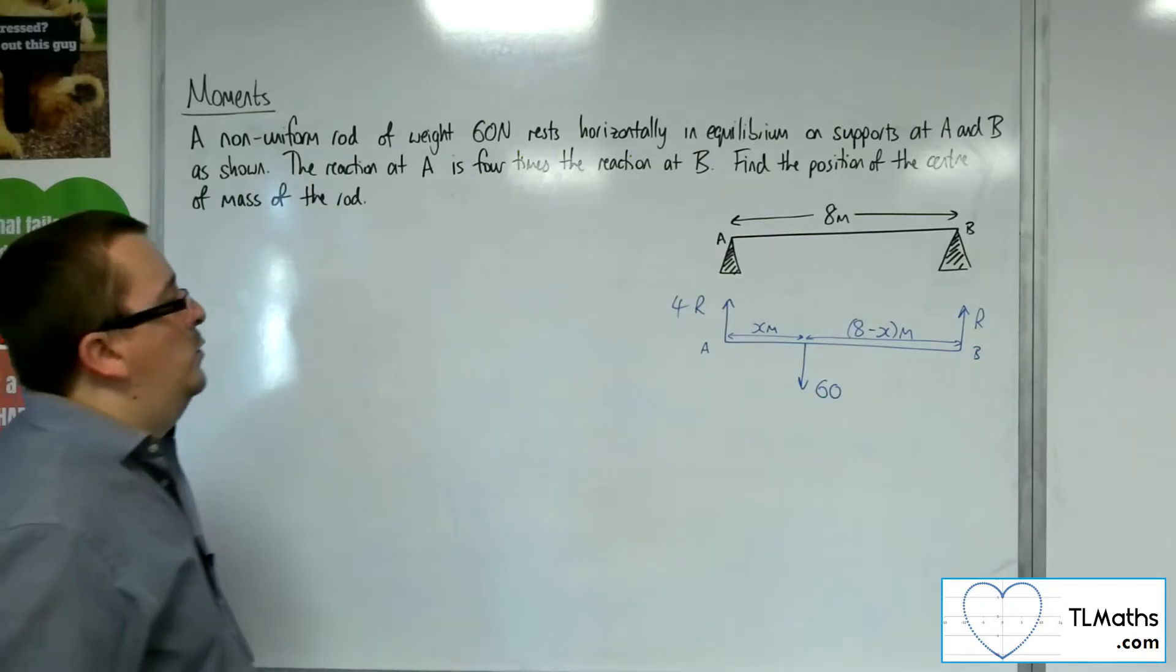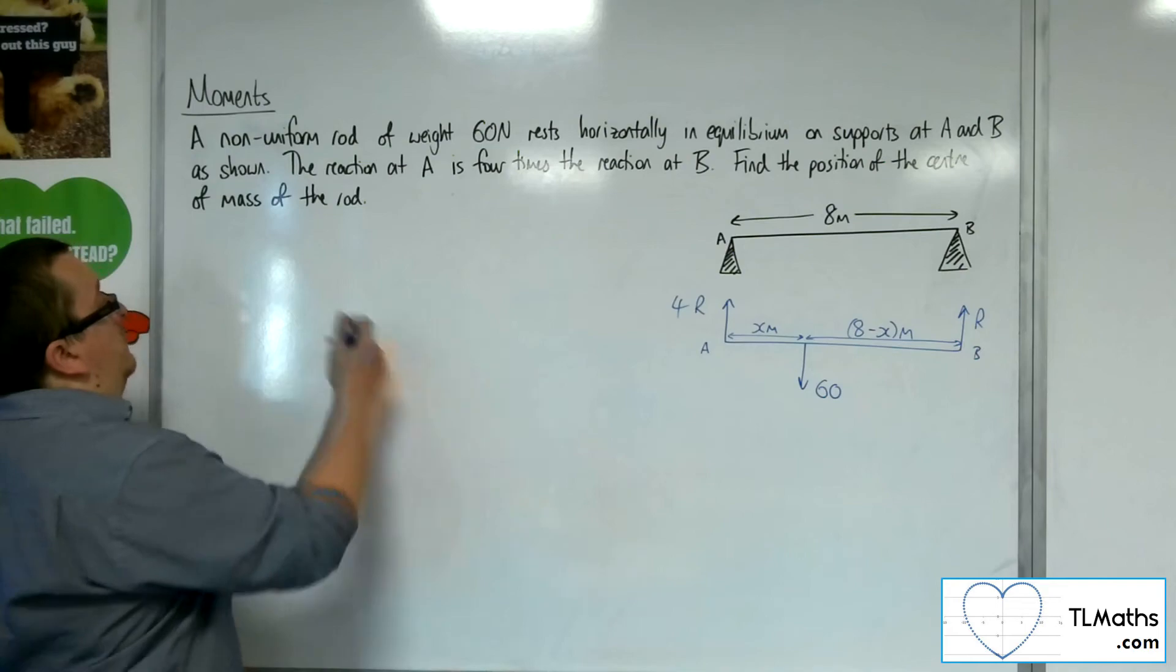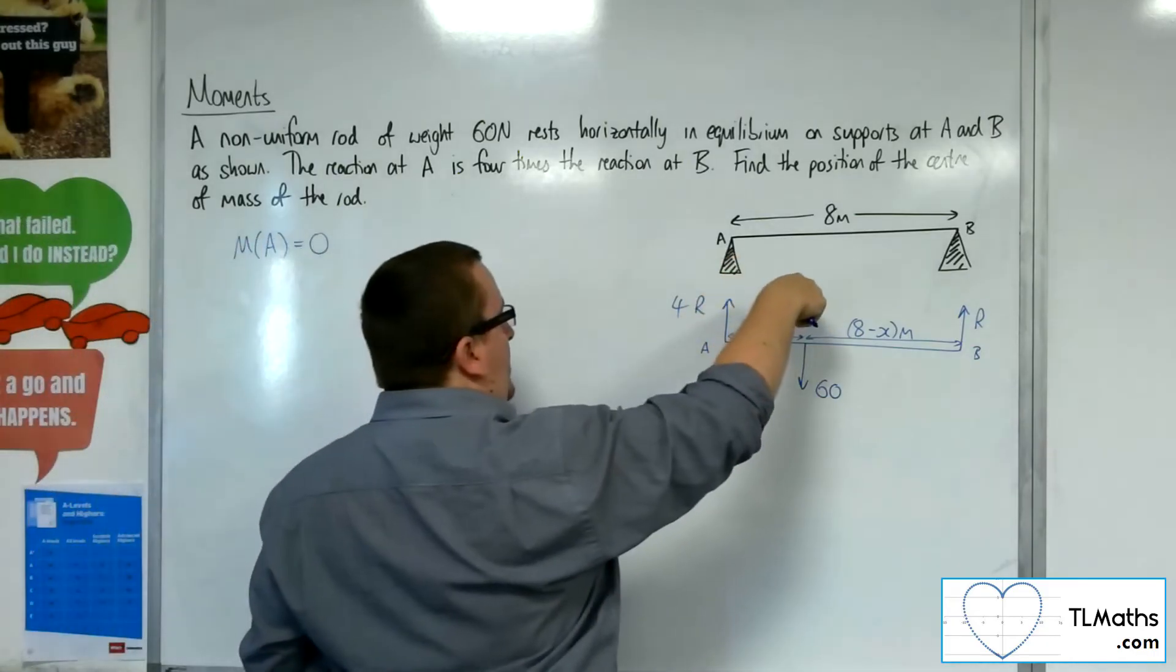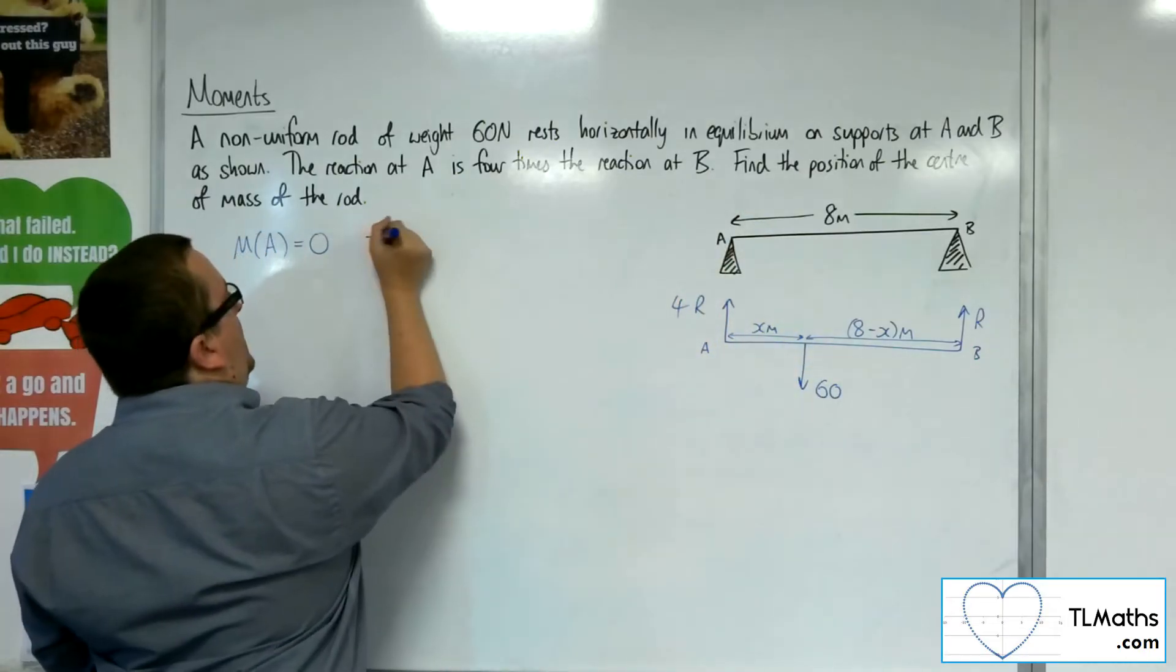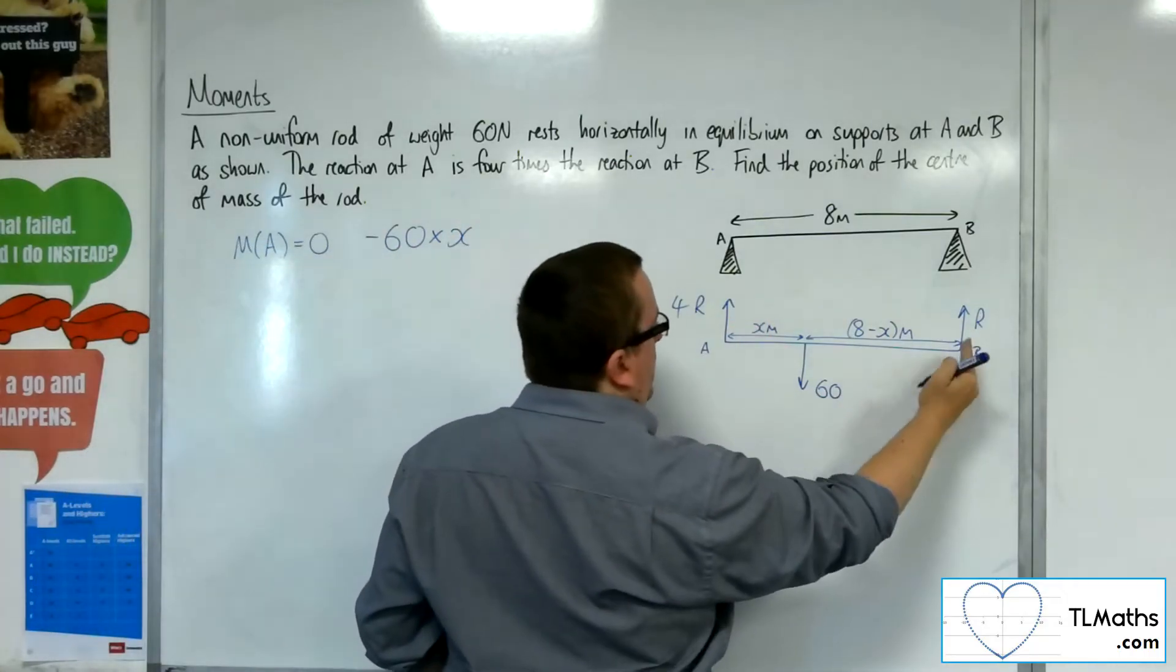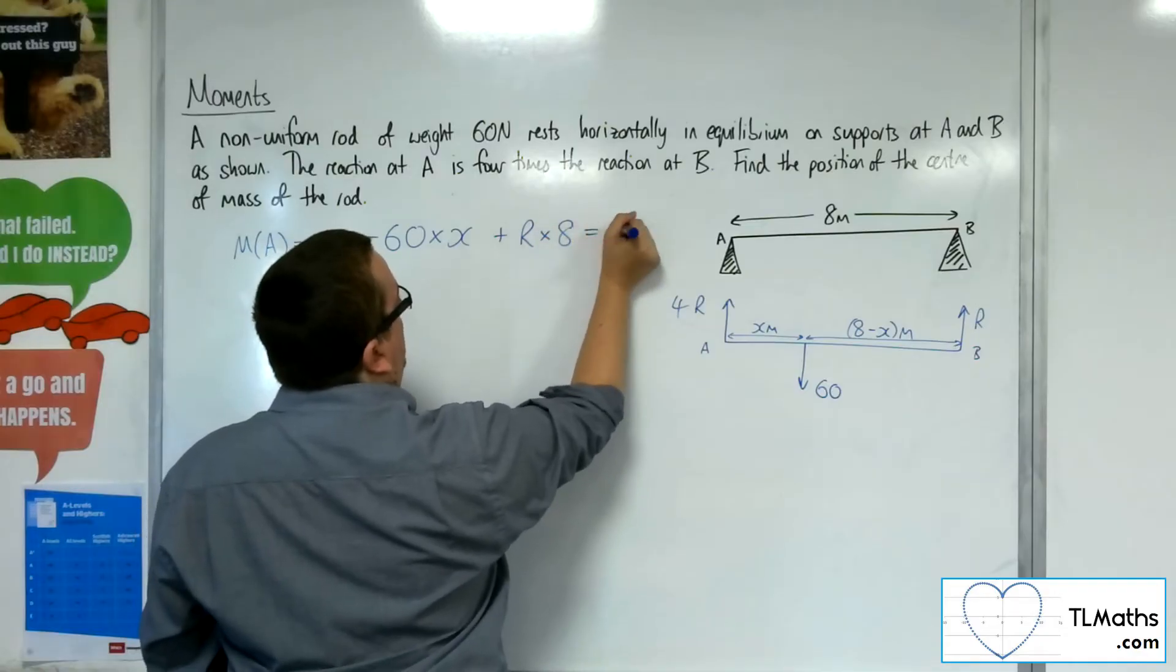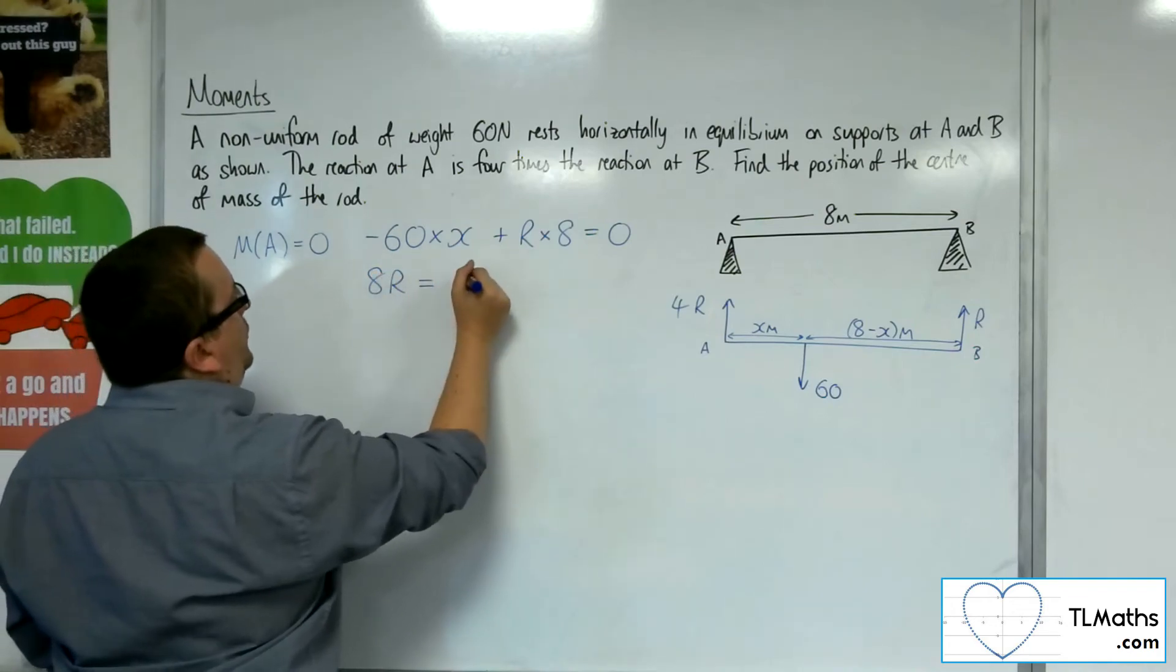Right, so if I take moments about point A, total moment is going to be 0 because we're in equilibrium. Then I've got the 60 newton force going clockwise, and so that will be negative 60 times the distance x. And then I've got the reaction force at B going anticlockwise. That will be positive, and that will be R times the distance, which is 8. And so that's going to be equal to 0. So we've got 8R is equal to 60x.